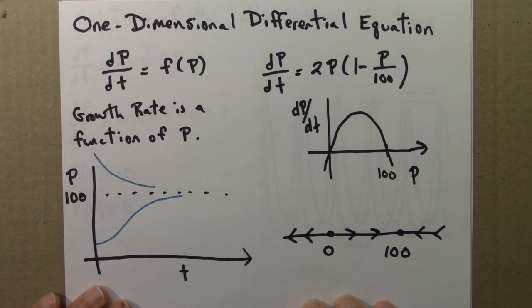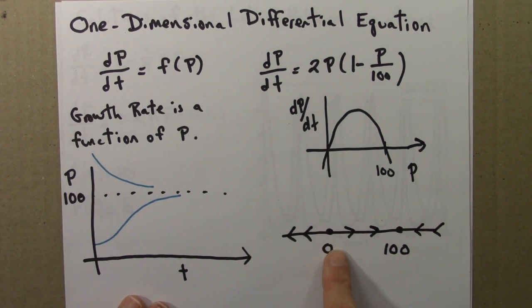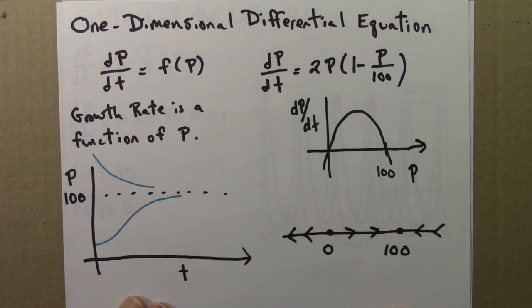Recall that for one-dimensional differential equations, we formed a phase line. And this lets us summarize the behavior of all solutions to the equation. We see anything between 0 and 100 goes up to 100, anything bigger than 100 goes down, and so on.